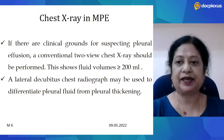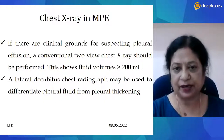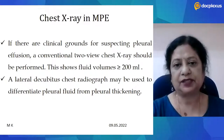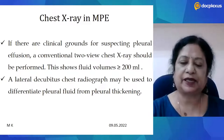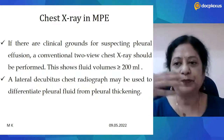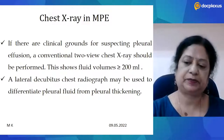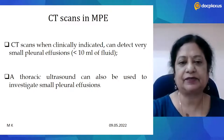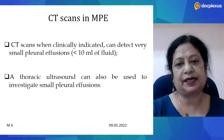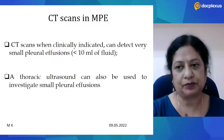If there are clinical grounds for suspecting pleural effusion, we order a conventional two-view chest X-ray. The PA view shows fluid volumes of at least more than 200 ml. We can also use a lateral decubitus chest X-ray to differentiate pleural fluid from pleural thickening. CT scans, done when clinically indicated, can detect very small amounts of pleural effusion — even around 10 ml or less. Thoracic ultrasound can also investigate and identify small pleural effusions.